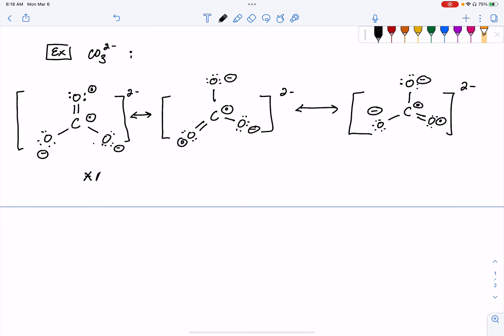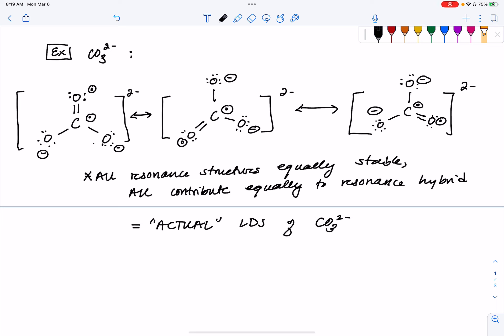So since all of these resonant structures are equally stable, then they all contribute equally to the resonance hybrid, which is the actual Lewis dot structure of carbonate.